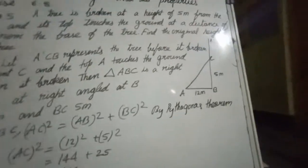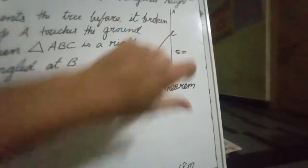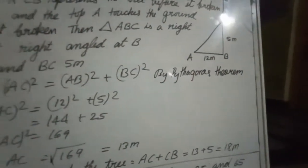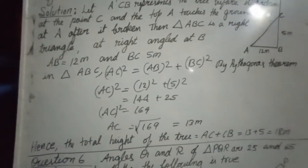13 plus 5. Why 5? Because the cut down tree's length is 13, then already 5 was there. So 18 meter the height of the tree. Now let us go to the 6th question.